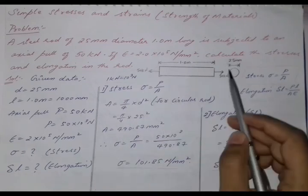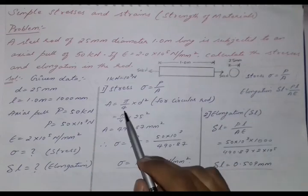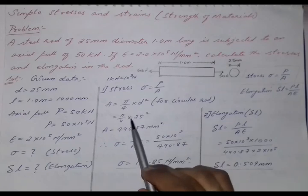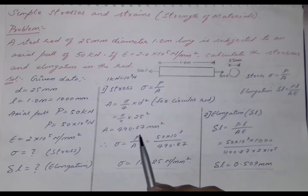Load is given to us. As the cross section of the bar is circular, we have to find the area by using circular rod formula, that is pi by 4 into D square. By substituting the value of D, we got area as 490.87 mm square.